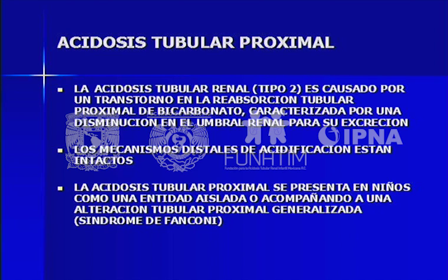Lo característico de la acidosis tubular proximal es que estos niños pierden bicarbonato a cifras menores que el umbral, donde realmente lo deberían retener. Esto se puede presentar como una entidad aislada, es decir, solo hay problemas en la reabsorción tubular proximal de bicarbonato, o en toda la línea del túbulo proximal: sodio, potasio, aminoácidos, glucosa, calcio. Eso va a configurar lo que se conoce como síndrome de Fanconi.